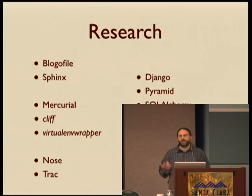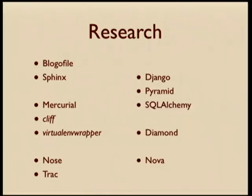The designs we came up with used patterns found by examining other applications and frameworks. During my research I looked at a few projects I was already familiar with and several I hadn't used before but knew used plugins. Blogifile and Sphinx are two apps for working with text and publishing that use extensions primarily to add new content processing features. Mercurial is a command-line app that can be extended with new subcommands. Cliff is a library I wrote for building applications with subcommands in a similar way. Virtualenvwrapper is another command-line tool that uses hooks to extend the features of commands themselves without adding new commands.